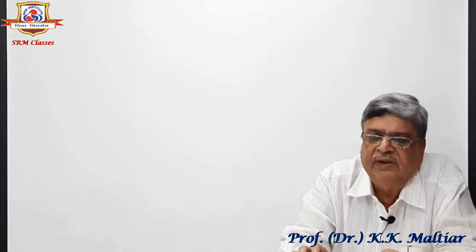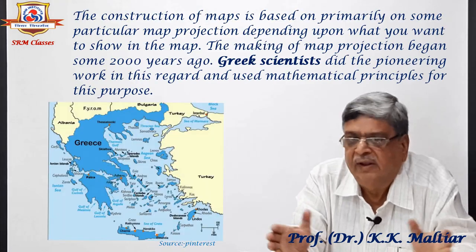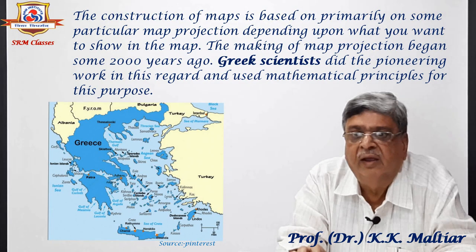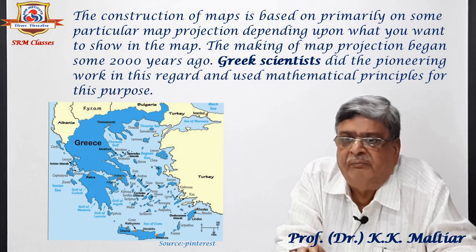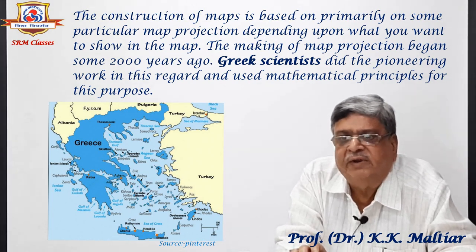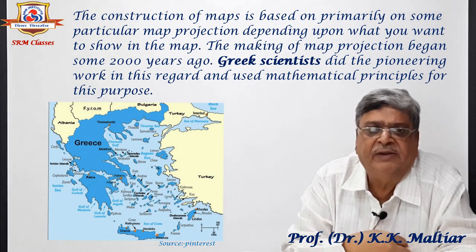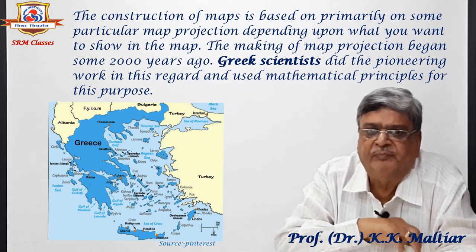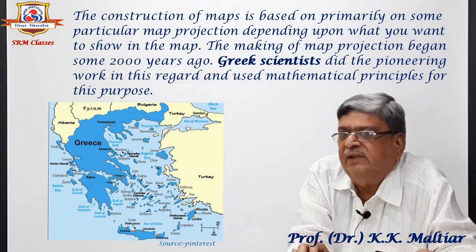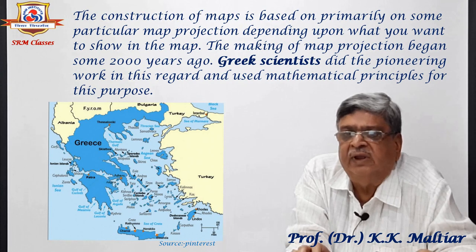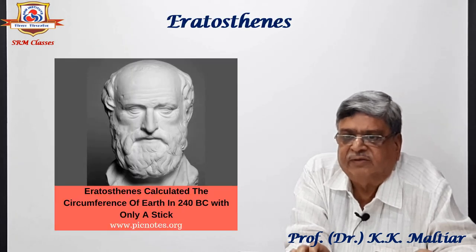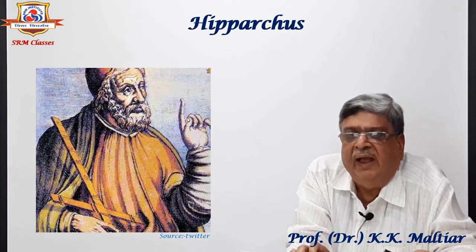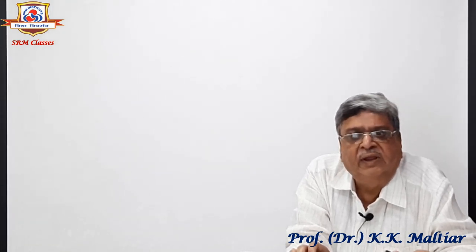Let me now come to the second word, that is projection. The construction of maps is based primarily on some particular map projection, depending upon what you want to show in the map. The making of map projection began some 2000 years ago. Greek scientists did the pioneering work in this regard and used mathematical principles for this purpose. The works of Anaximander, Eratosthenes, Apollonius, and Hipparchus are some important contributors in this field.